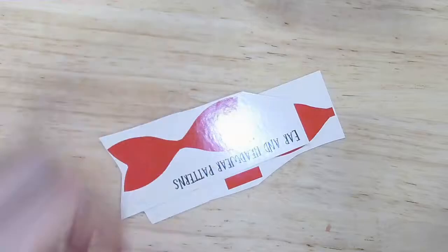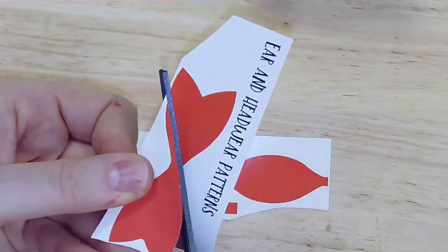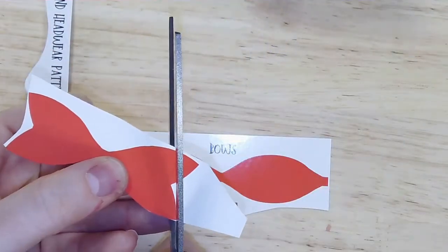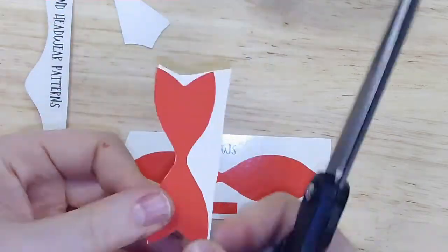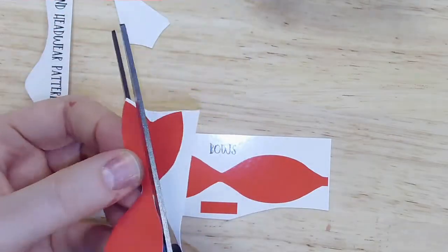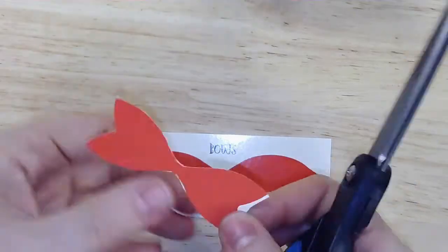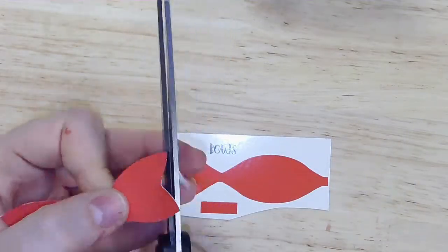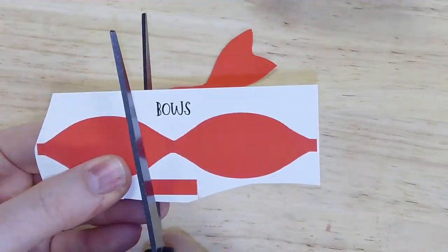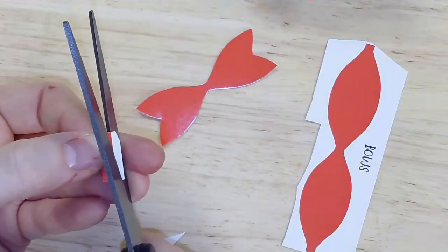For this kit, we're going to show you how to make a bow using felt and a pattern. So first, you want to cut out your pattern, which is included in our basic kit. And for this one, you want to make sure to cut close to the edge to make sure that you get a consistent looking bow.